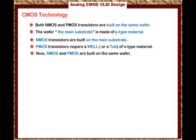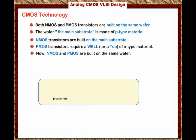Let's show an animation of how this is done. We start with the main substrate or wafer, which is the bulk of the integrated circuit. The first thing we do is create an N-well for the PMOS transistor.